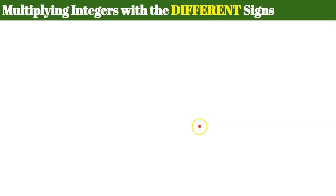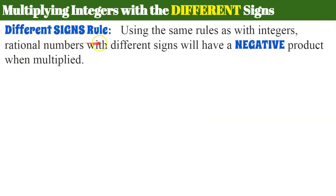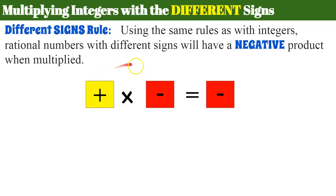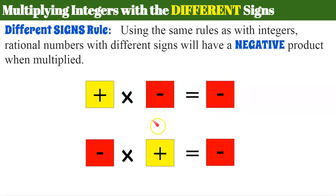Now the different signs rule, using the same rules as with integers: rational numbers with different signs will have a negative product when multiplied. A positive multiplied by a negative factor equals a negative product. A negative factor multiplied by a positive factor also gives a negative product. Different signs, negative product.